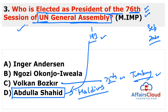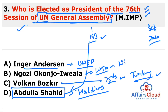Other important options: Inger Andersen is currently the head of the United Nations Environment Programme. Ngozi Okonjo-Iweala — a very important appointment — became the first female Director General of the World Trade Organization; she belongs to Nigeria. The UN General Assembly has 193 total member countries, its headquarters is in New York, USA, and it was established in 1945 under the UN Charter.